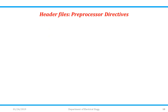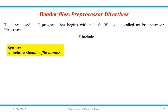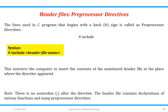Let us discuss preprocessor directives. Lines in a C program that begin with a hash symbol (#) are called preprocessor directives. The syntax is: #include header_file_name. For example, #include conio.h or #include stdio.h. This instructs the computer to insert the contents of the mentioned header file at the place where the directive appears. Important note: there is no semicolon after the directive. Header files contain declarations of various functions and many preprocessor directives.